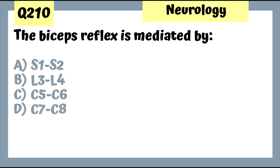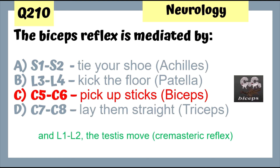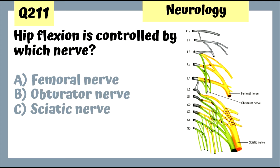Question 210: The biceps reflex is mediated by C5 to C6 — 'pick up the sticks.' L1 and L2 — 'the testes move' — that's the cremasteric reflex, which for example is absent in testicular torsion.